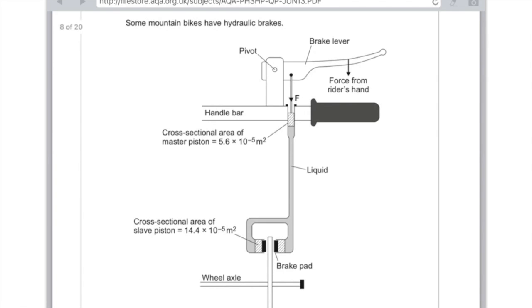And therefore, it means that the force experienced by the slave pistons is greater. And the reason for it is literally you just need to say because the slave piston has a larger area. You could be slightly more in-depth and say that the area of the slave piston is greater than the area of the master piston. But regardless, you will get the marks.